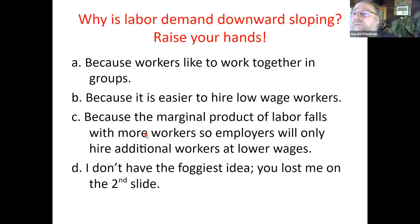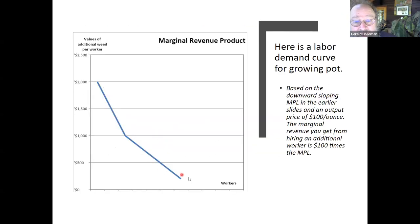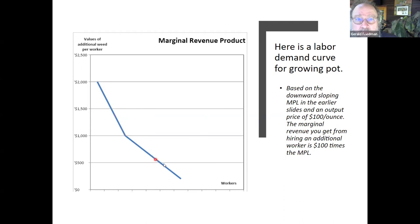Why is labor demand downward sloping? Because the marginal product of labor falls with more workers, so employers will only hire additional workers at lower wages. Here's your marginal revenue product of labor curve — it's also the labor demand curve. Marginal product of labor is downward sloping, so at higher wages you have fewer workers, moving up your marginal product of labor curve, which gives you the marginal revenue product curve. If wages go down, you hire more workers, moving down your marginal revenue product curve.